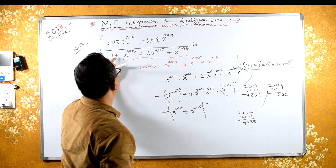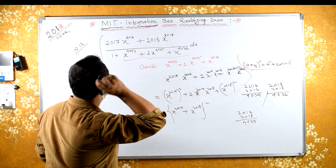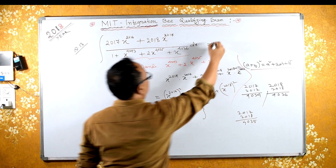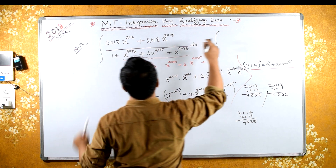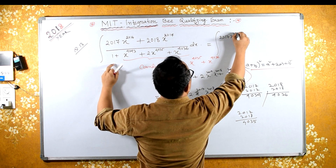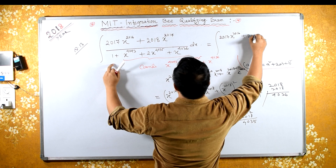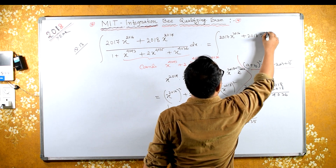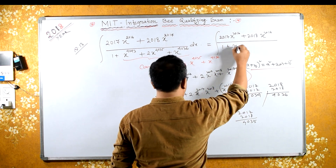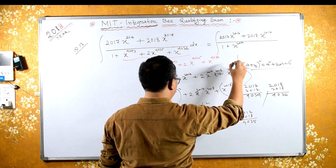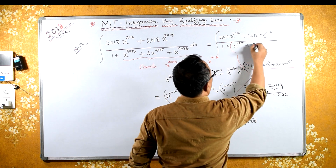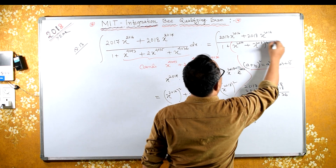Therefore, this is x raised to 2017 plus x raised to 2018, the whole square. So I can write the integral as: integral of x raised to 2017 times x raised to 2016 plus 2018 times x raised to 2017, upon 1 plus the bracket x raised to 2017 plus x raised to 2018 whole squared, into dx.